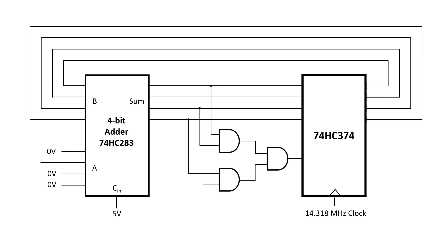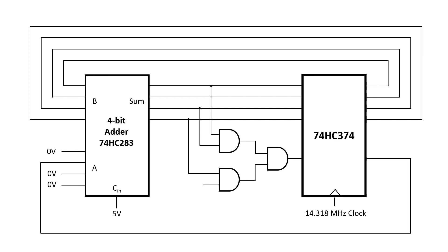I have these AND gates which detect 13. I'm going to send that into a flip-flop, and then feed the output back into the second bit of the A input of the adder. From this we can derive all the important clocks we need: character clock, dot clock, and our colorburst reference clock.